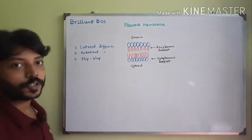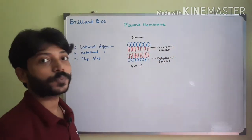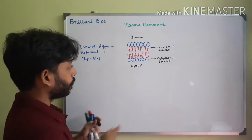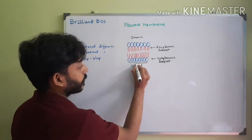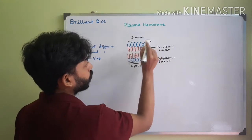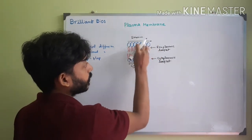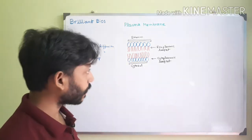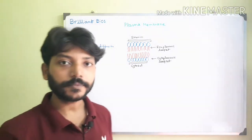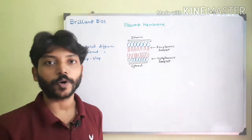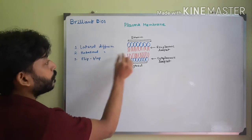In the case of lateral diffusion or lateral movement, the lipid molecule of a particular leaflet — it could be the cytoplasmic leaflet or the exoplasmic leaflet — moves along the left side or right side. So the lipid molecule can move in this direction or that direction within the same leaflet. This is called lateral movement. I will show an experiment by which you can understand whether the lipid molecule undergoes lateral movement or not.